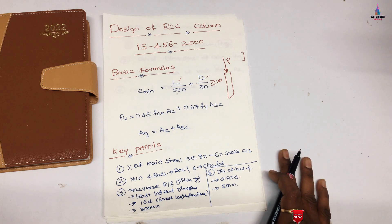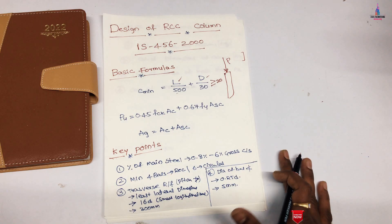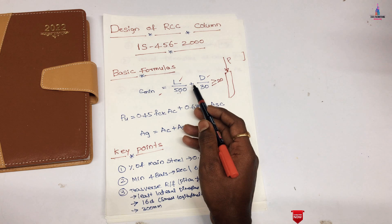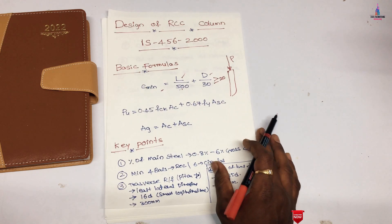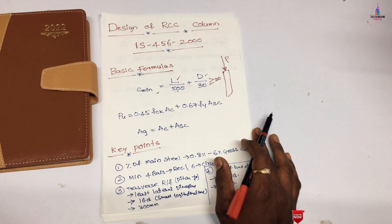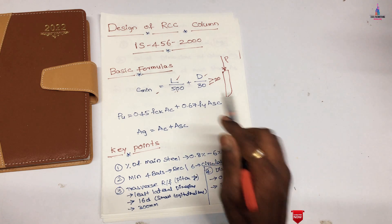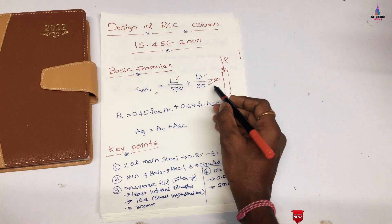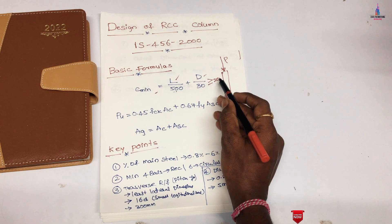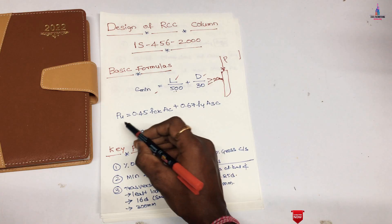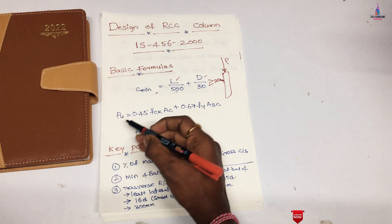For designing column sections, we need to consider three basic formulas. The first is e_minimum = L/500 + D/30, which must be greater than 20 mm, where L is the length of the column and D is the effective depth of the column.